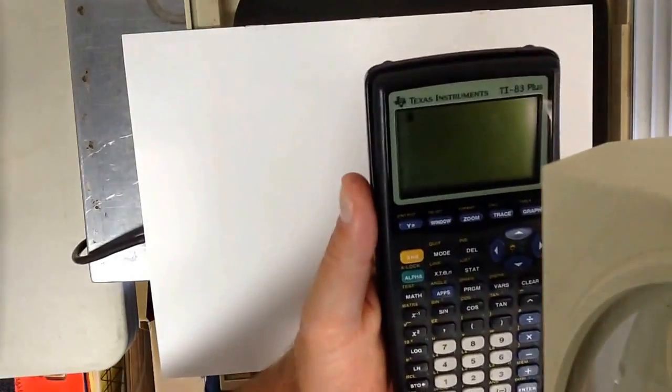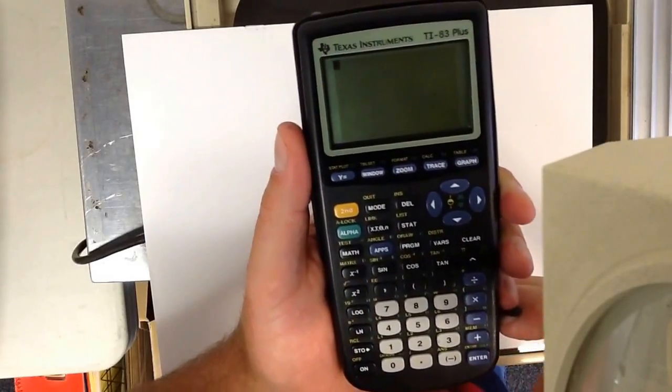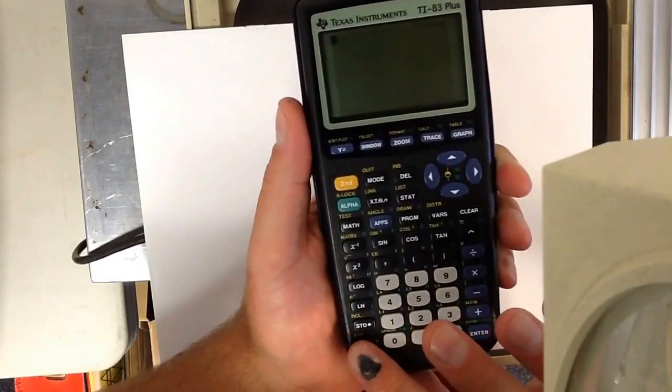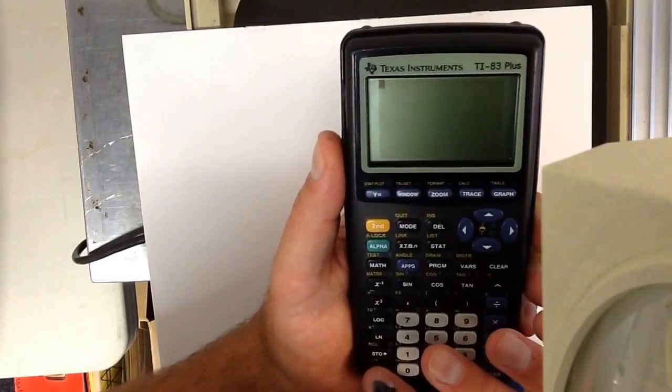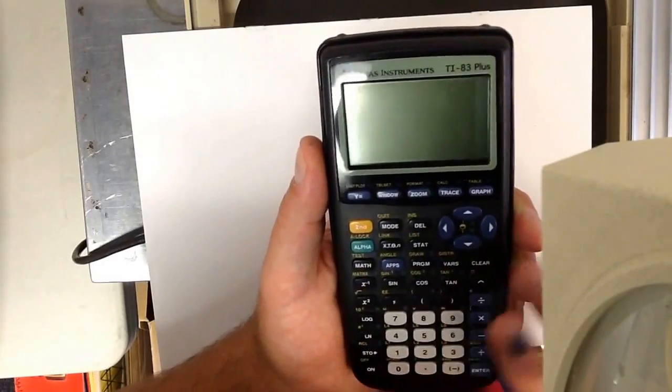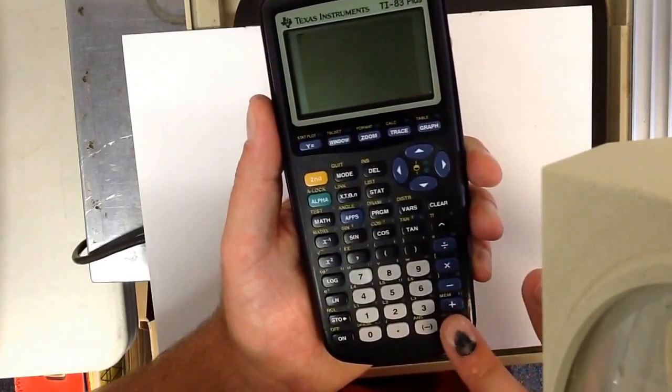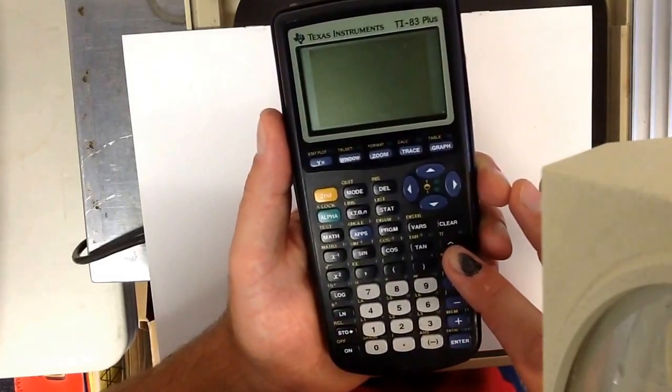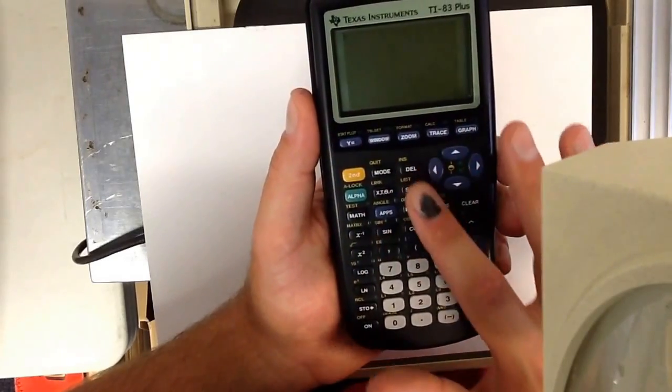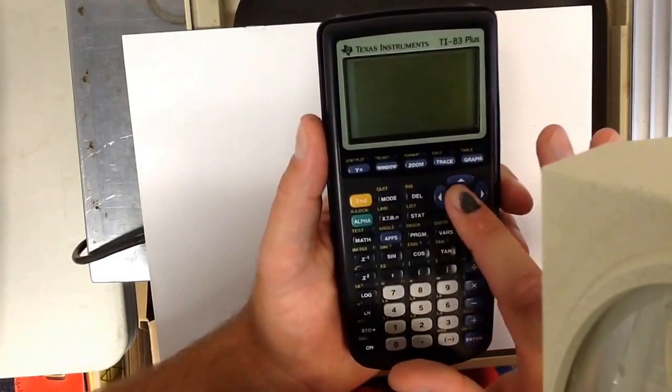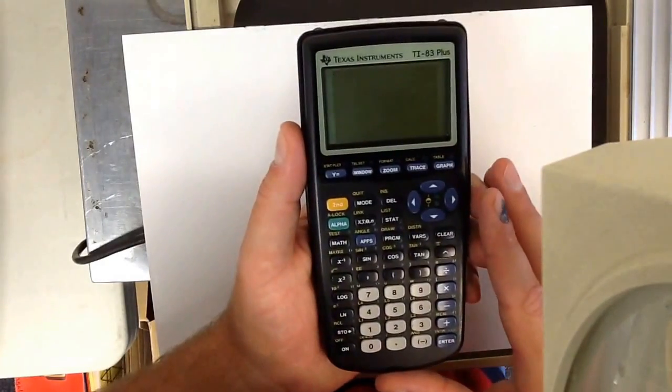So, basics of the TI-83 and 84+ calculators. Turning on is simple. Press this button here and you see that little indicator that it's on. It blinks. You've got your number pad, your basic operations, your exponent which looks like a caret, and many other functions. We've got arrows, things up here. I'm only going to go over the basics today because I don't want to overwhelm you.